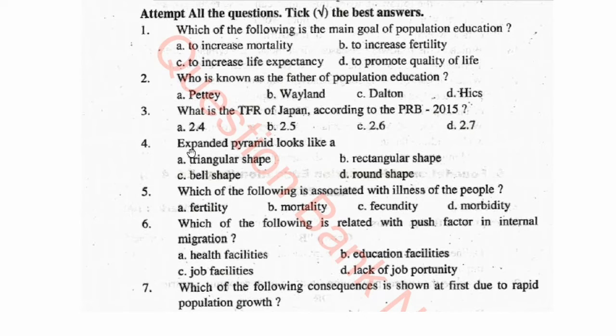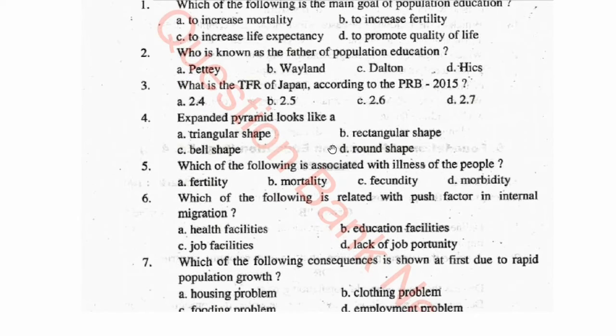Question 4: An expanded population pyramid looks like a triangular shape, rectangular shape, bell shape, or round shape. Question 5: Which of the following is associated with illness of the people? Options: fertility, mortality, fecundity, or morbidity.